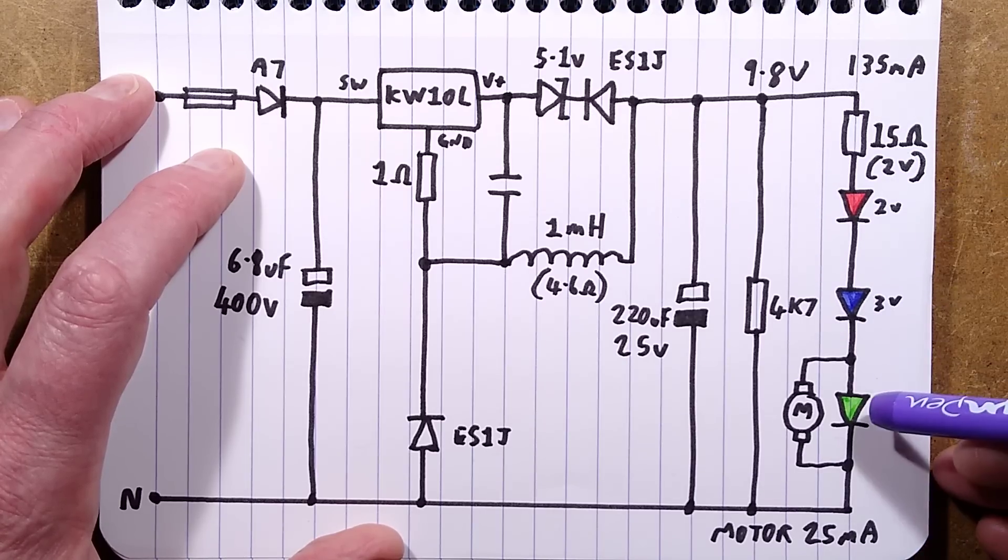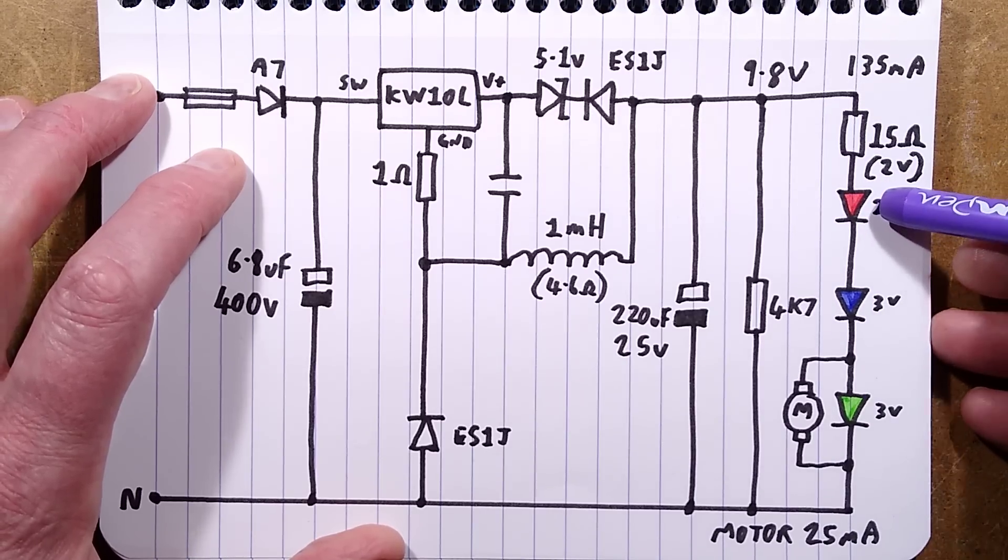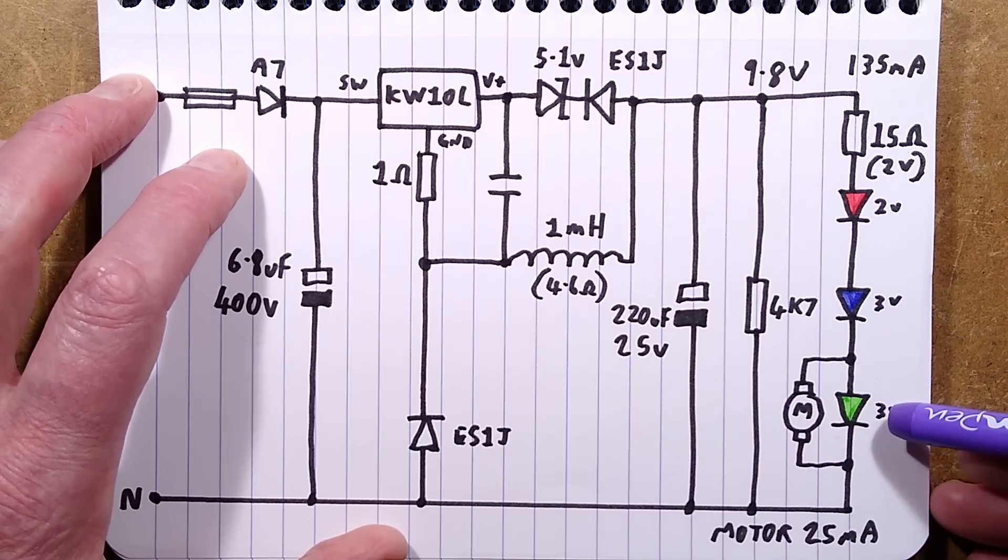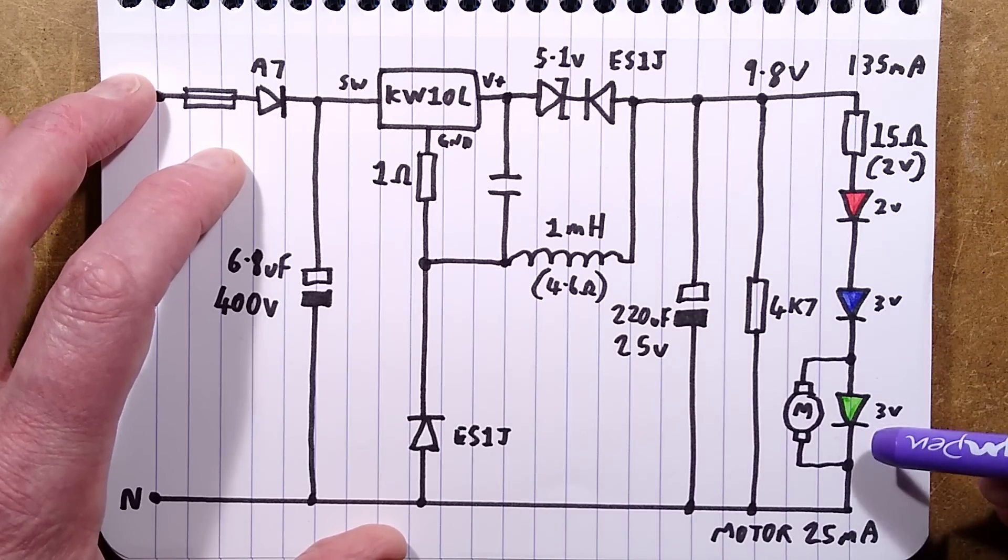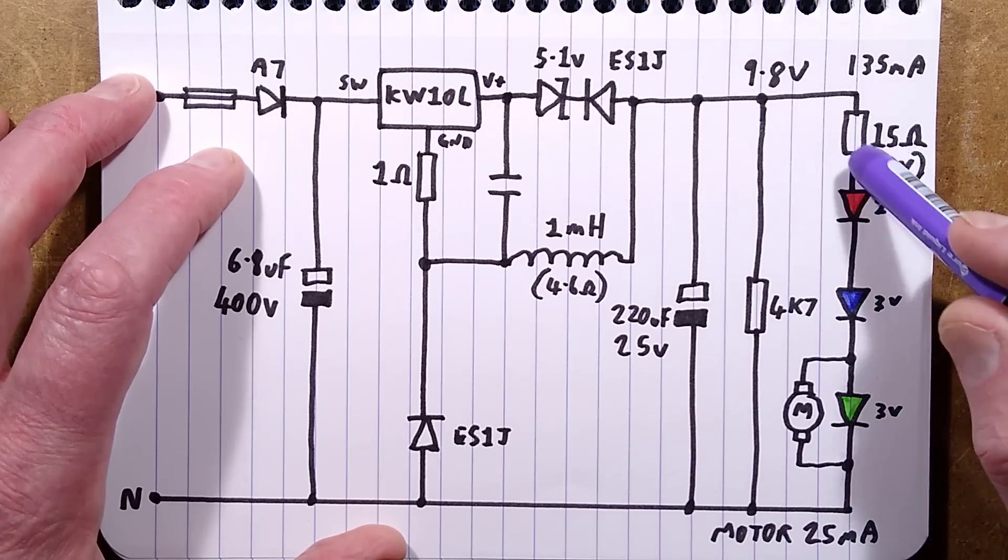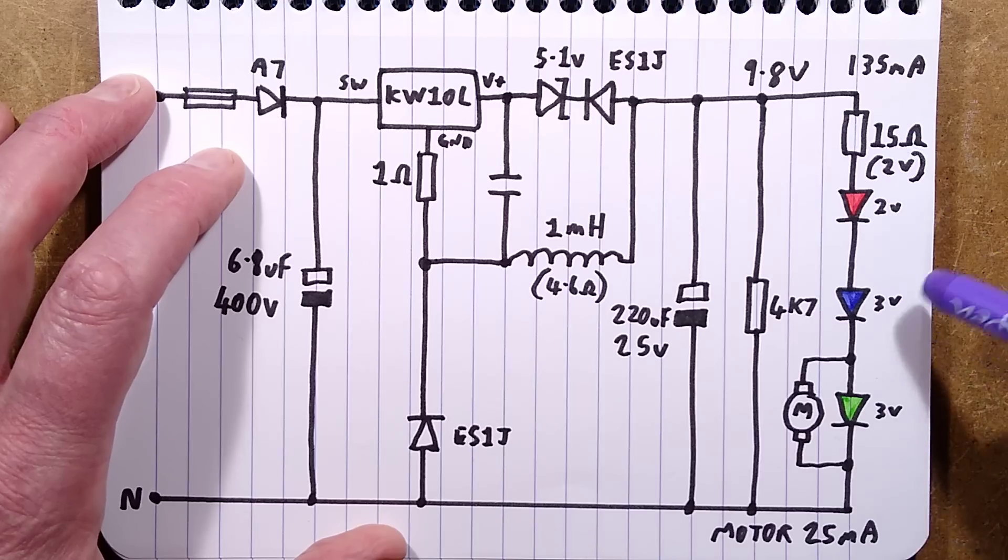Then it goes to the LEDs. It's got a 15 ohm resistor, that's the one that's upside down. It's got the red, blue and green. So 2 volts across the red, 3 volts across the blue, and 3 volts across the green. So it adds up to about 8 volts.